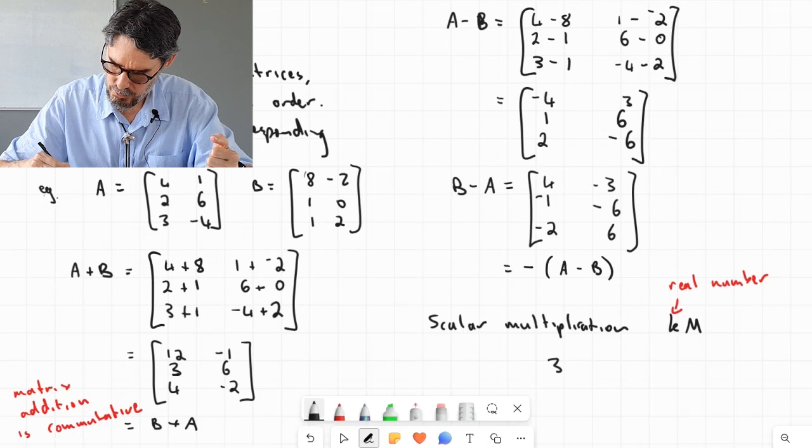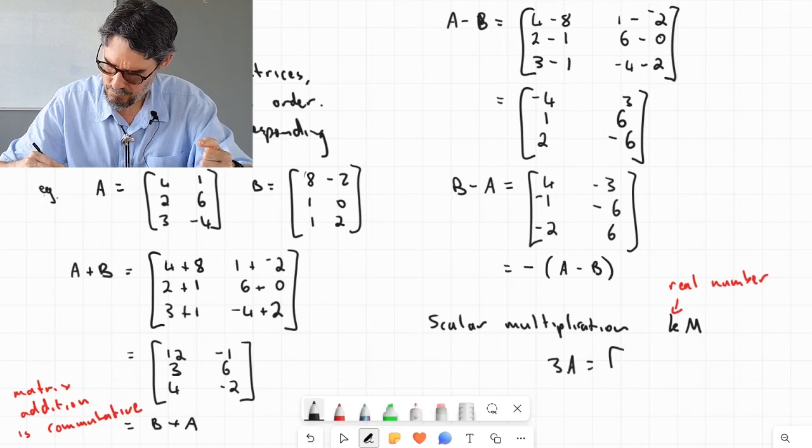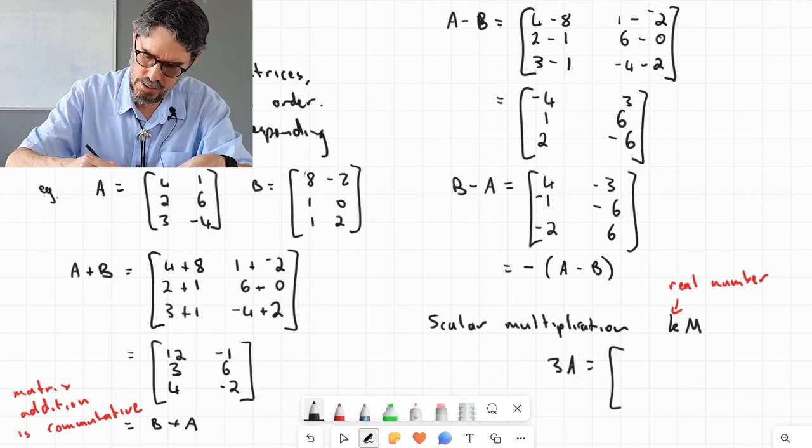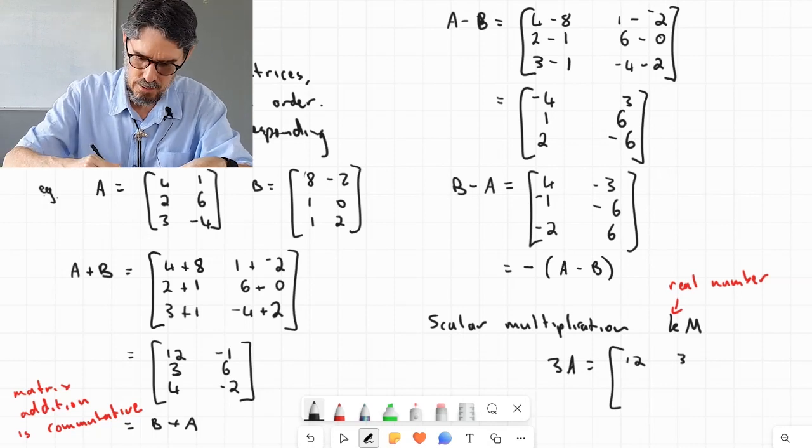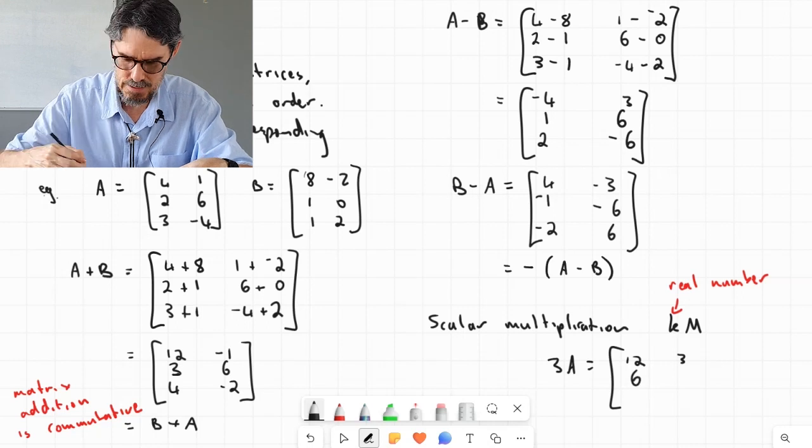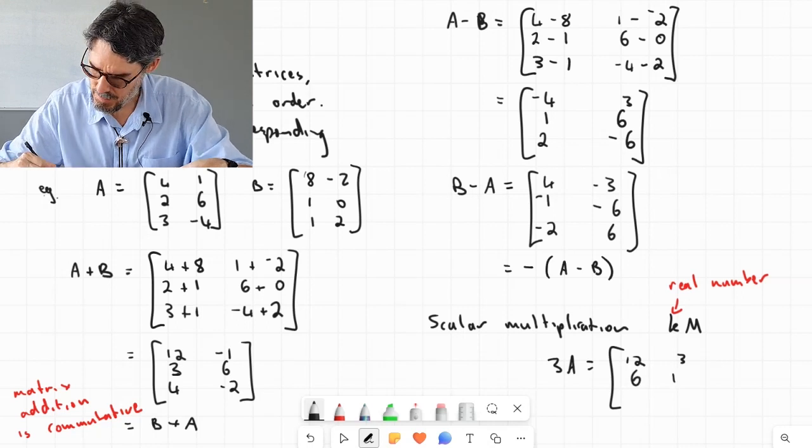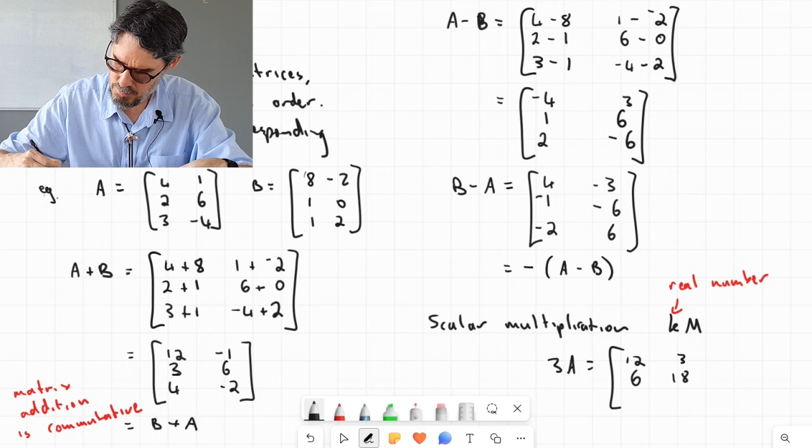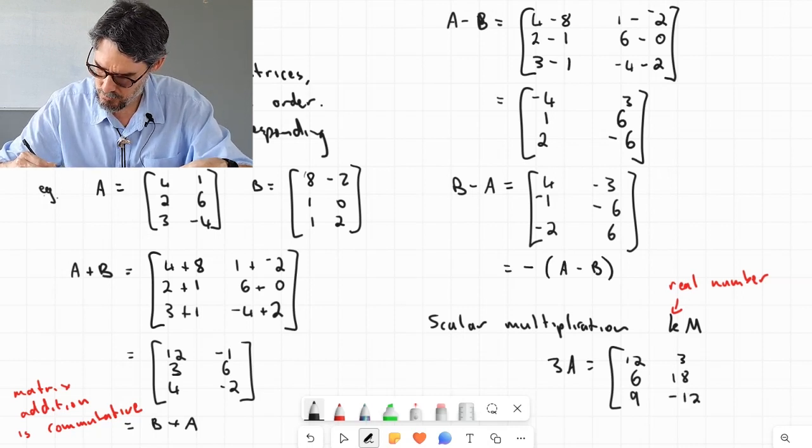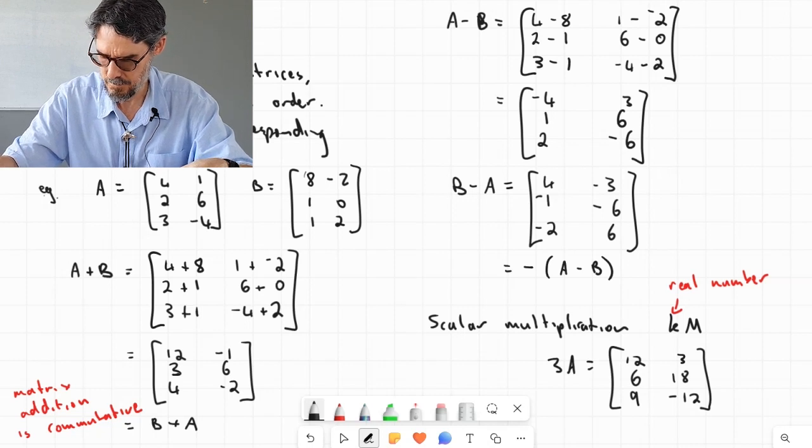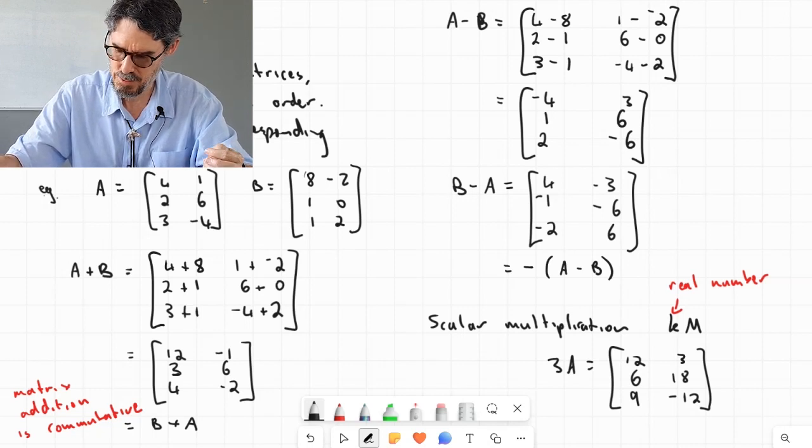So for example, 3A here. I'm going to get 3 times 4, which is 12. 3 times 1, which is 3. 3 times 2, which is 6. 3 times 6 is 18. 3 times 3 is 9. And 3 times negative 4 is negative 12. And that's scalar multiplication.